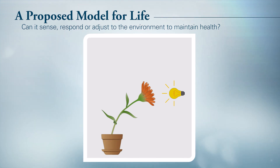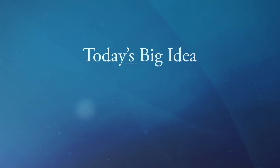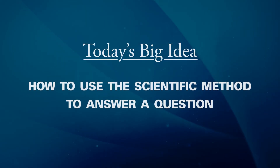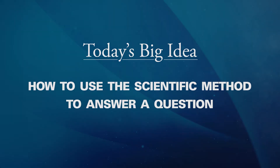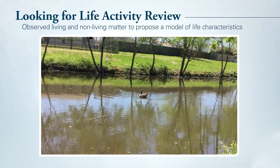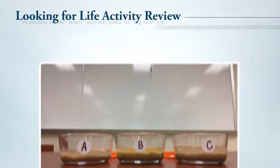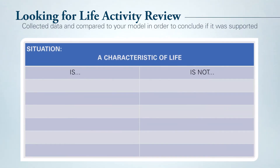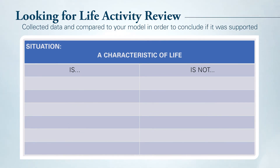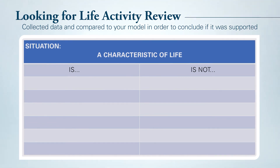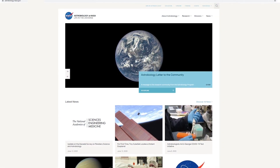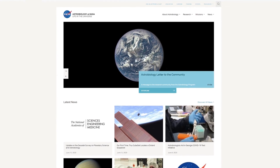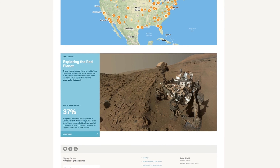This might be as simple as the blue heron earlier in this video grooming its feathers, or the turtles plopping into the water in response to my approach. Today's big idea was to use the scientific method to answer the question: what exactly makes something alive or not alive? You observed living and non-living matter to propose a model of life characteristics that you then tested in an experiment analyzing three alien soil samples. And just like NASA scientists, you collected actual data which you compared to your model in order to conclude whether it was supported. Hopefully, you had fun doing this activity and you now know more about what it means to be alive. Who knows? You just might find yourself at NASA one day in the not-too-distant future, helping to write the next chapter in NASA's hunt for signs of life on other planets.